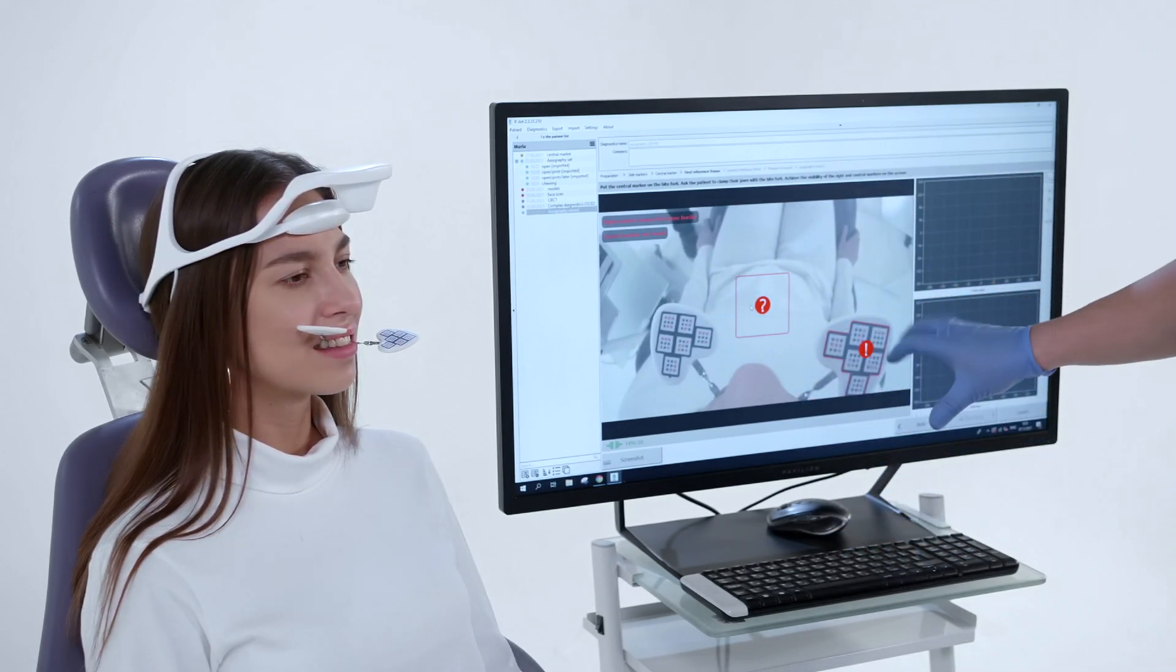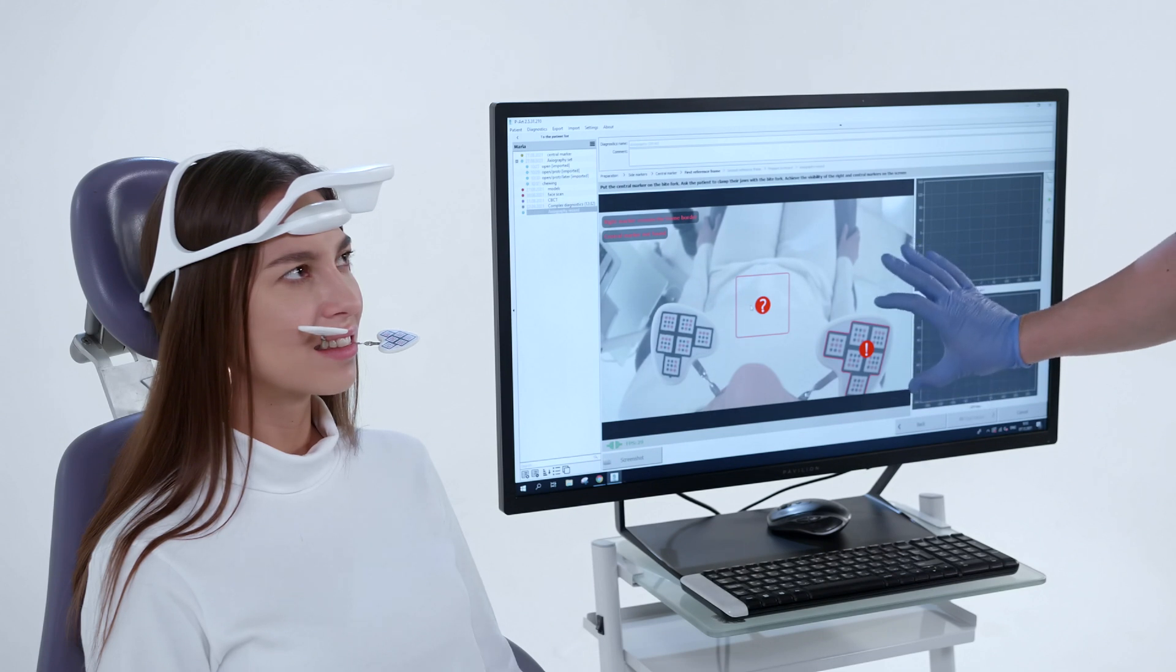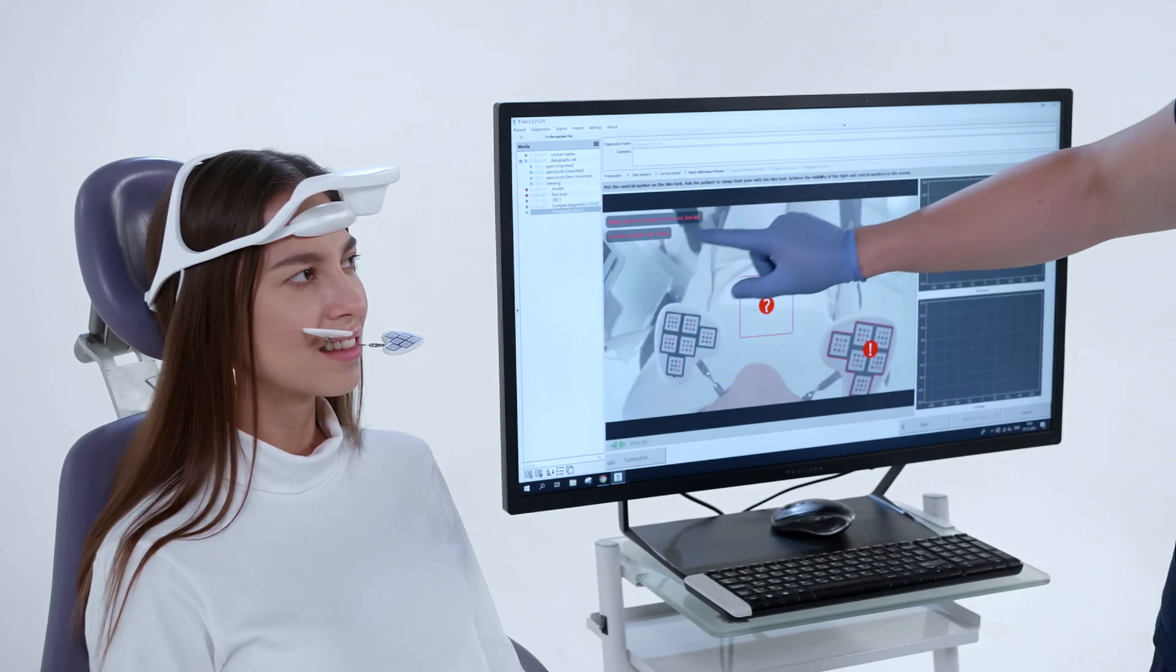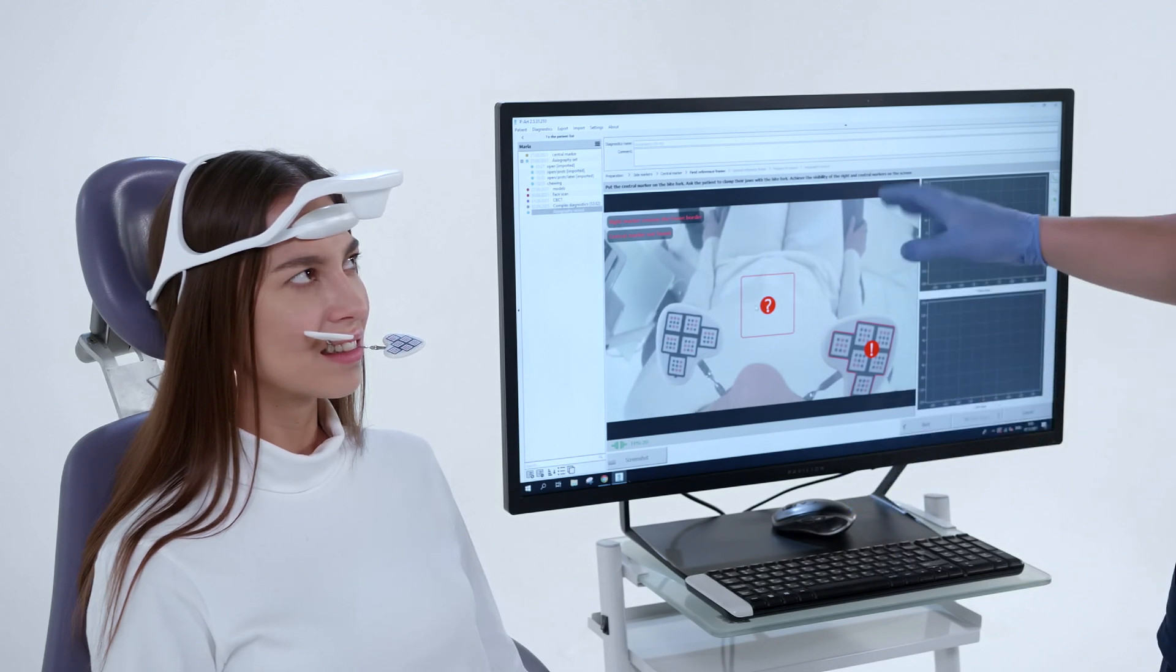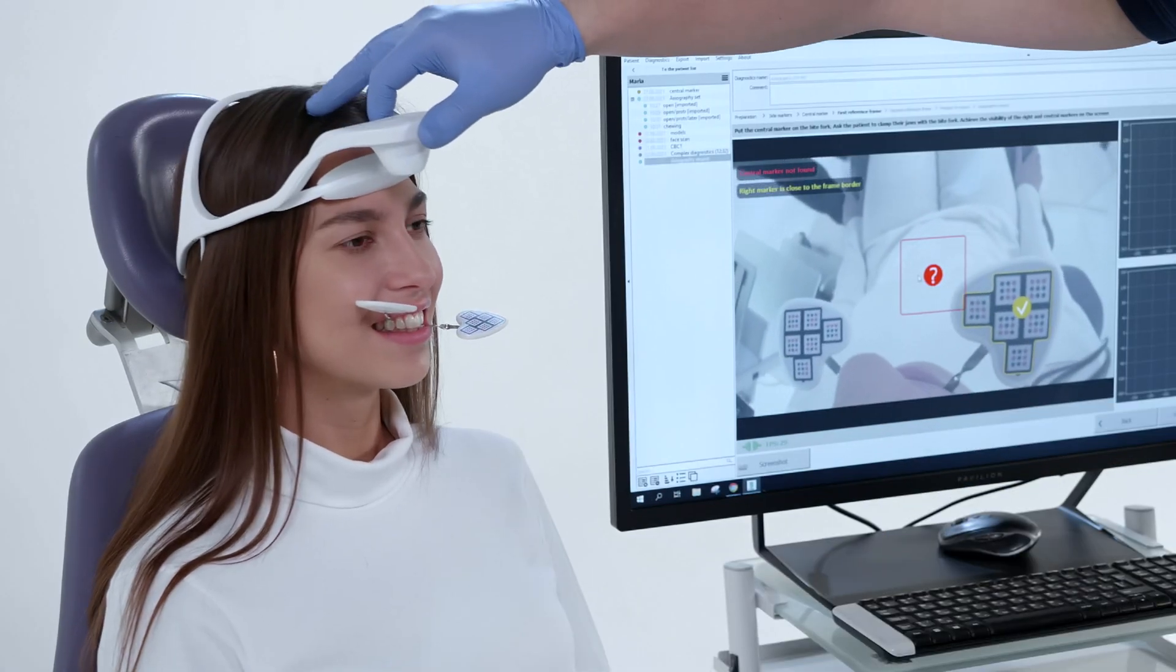The markers must be in the green zone. Yellow zone is acceptable. If the markers are located in the red zone, then the location of the Axiograph on the head must be corrected.